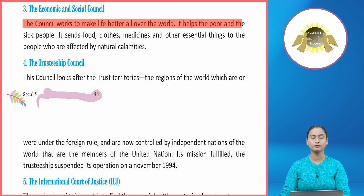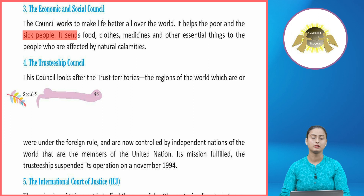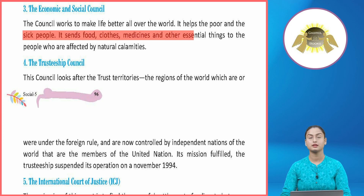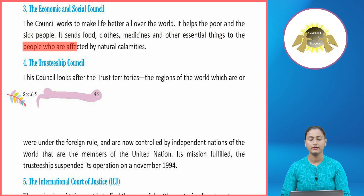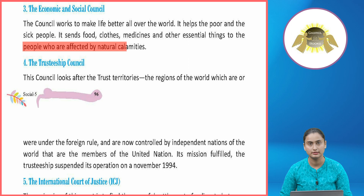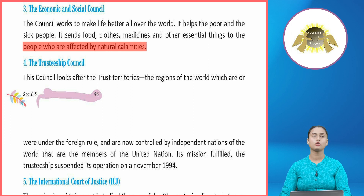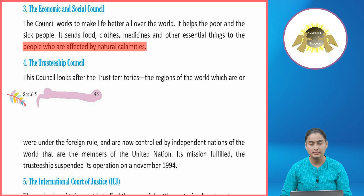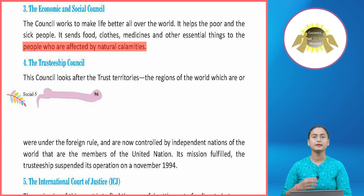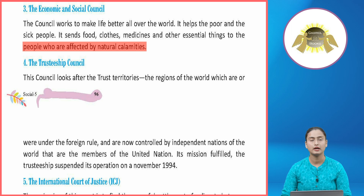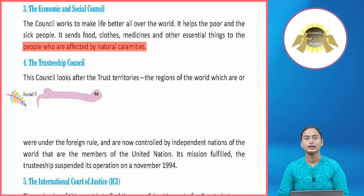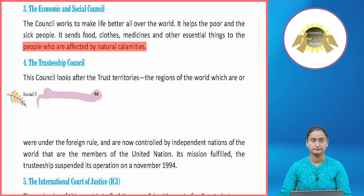The Economic and Social Council works to make life better all over the world. It helps the poor and the sick people. It sends food, clothes, medicines, and other essential things to people affected by natural calamities. Economic and Social Council gareeb logon ki aur bimaar logon ki madad karta hai. Jahan pe natural calamity aati hai — jaise earthquake, flood, cyclone — wahan ye kapda, khana aur medicines bhejta hai.